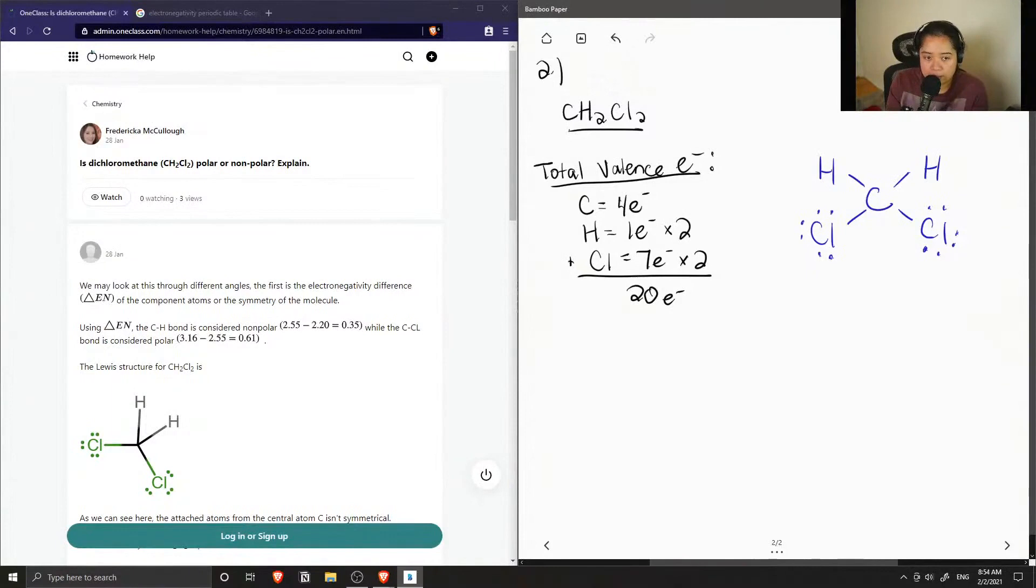So let's add them up. Eight, nine, ten, eleven, twelve, ten, fourteen. Okay, so our structure contains the 20 valence electrons. So we knew we drew a correct Lewis structure.